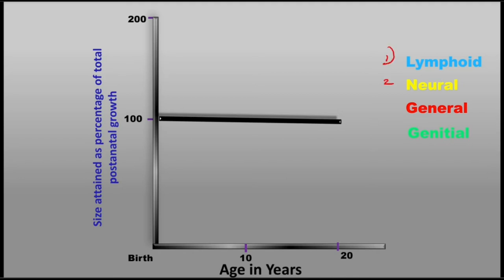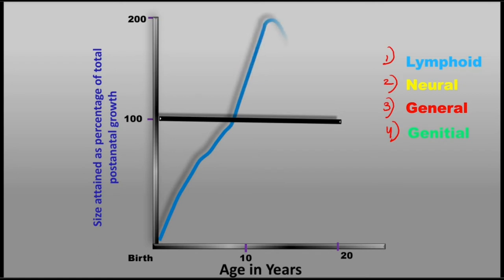The four tissue types are: lymphoid, neural, general, and genital. Looking at the graph plotted for size against age, the first curve is the lymphoid growth.